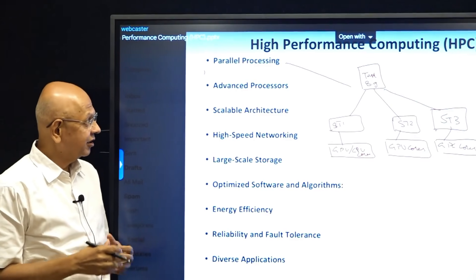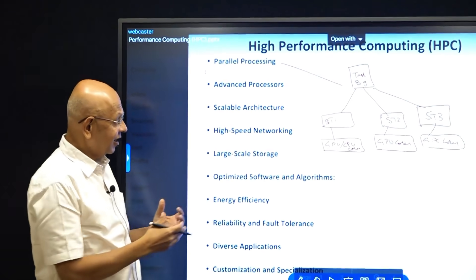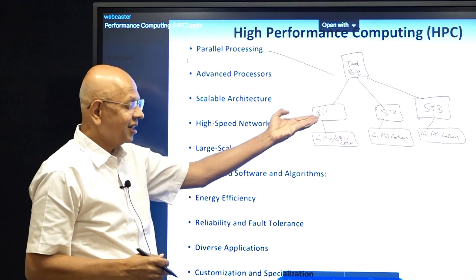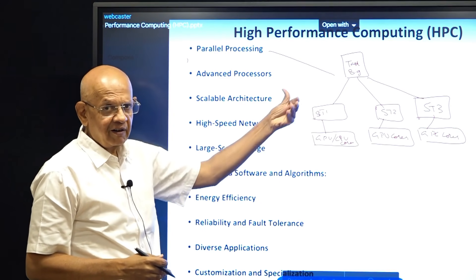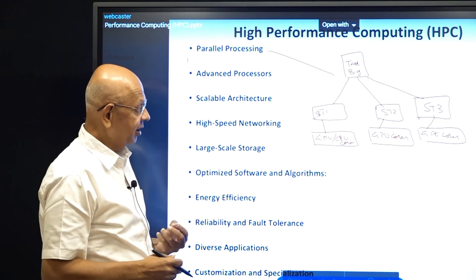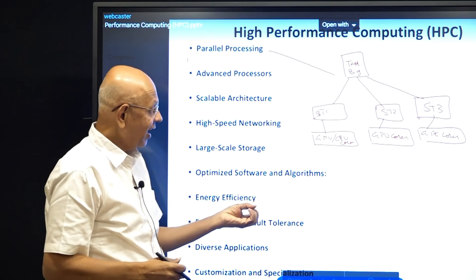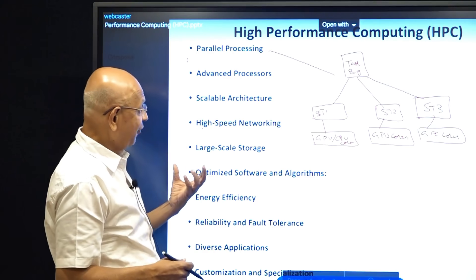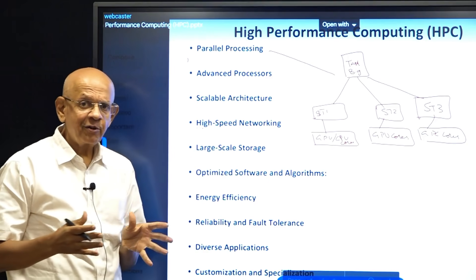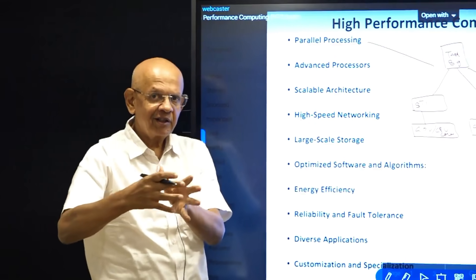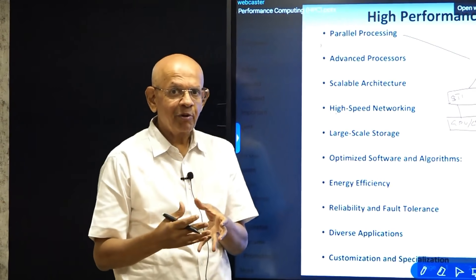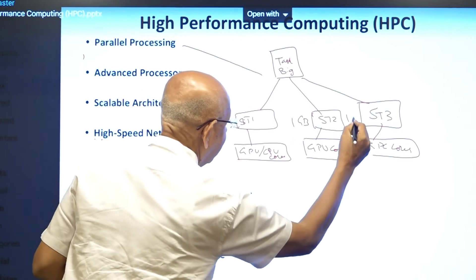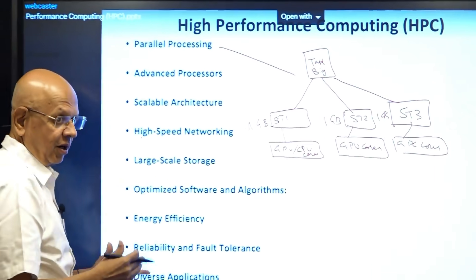Another aspect of high performance computing is scalability. Let us say we have three GPU cores deployed and the task has been split. It may happen that these tasks will increase in complexity and computing requirement. In that case, am I able to give more memory or more cores? All that would mean I have a scalable architecture. High performance computing needs a scalable architecture — the ability to scale from 10,000 requests to a million requests is necessary.